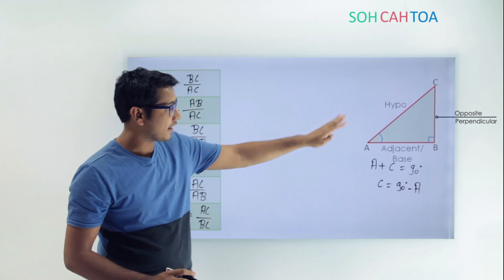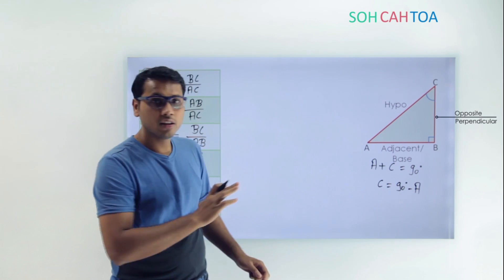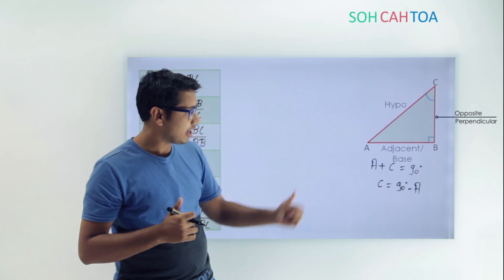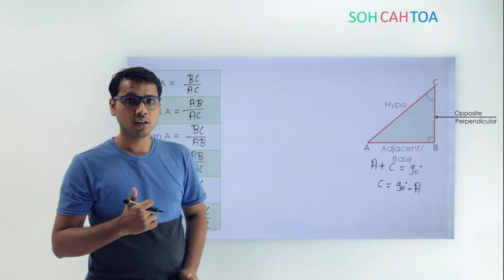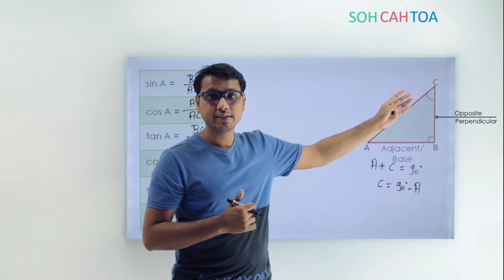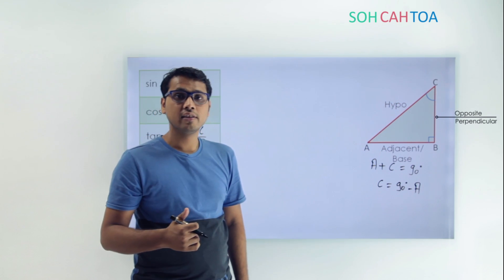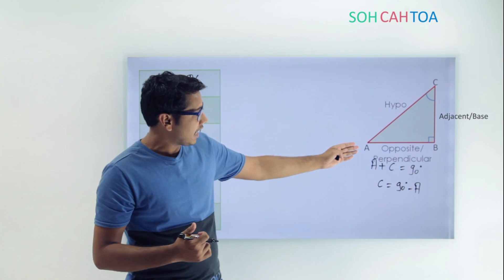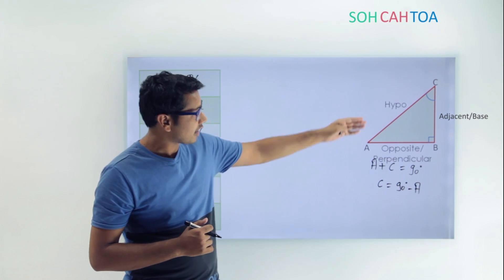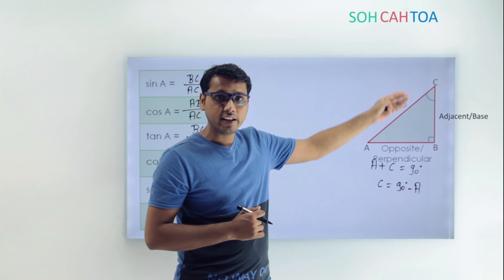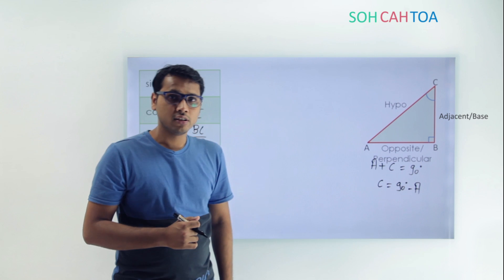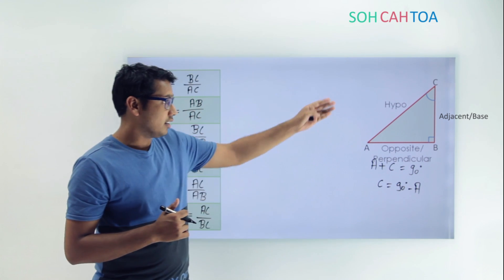Now focus on angle C. When we focus on angle C, will AB still be the adjacent? No — AB will not be adjacent anymore because our angle has changed. We are now talking about angle C, so our adjacent and opposite will change. AB will now be our opposite and BC will be our adjacent.